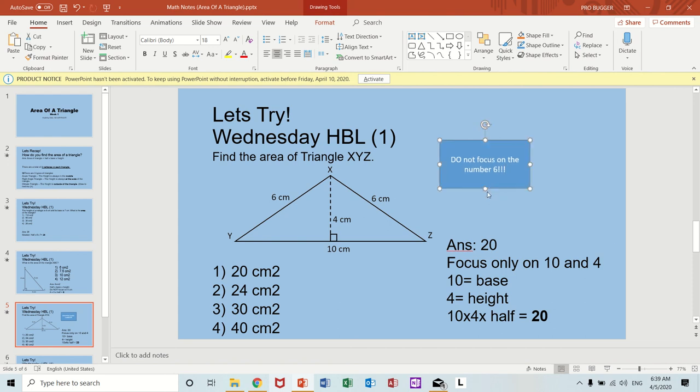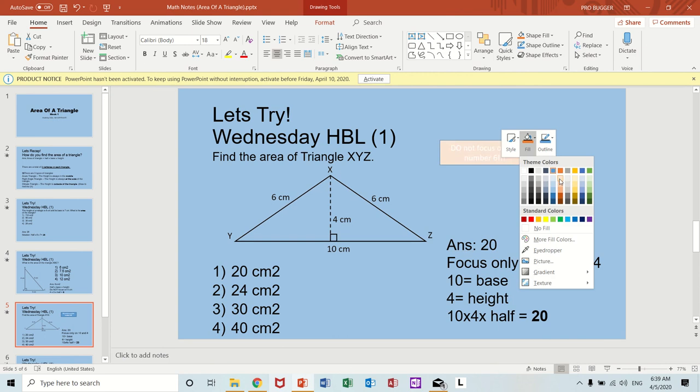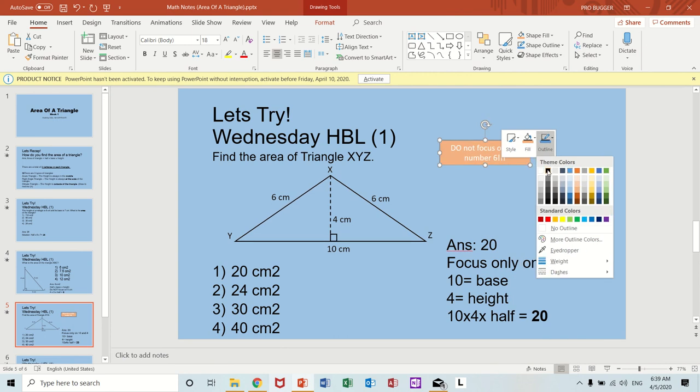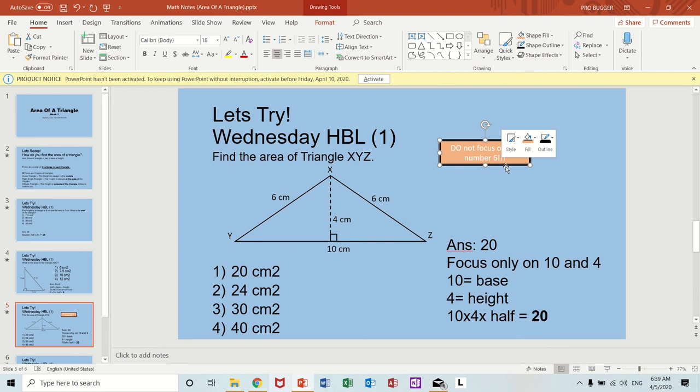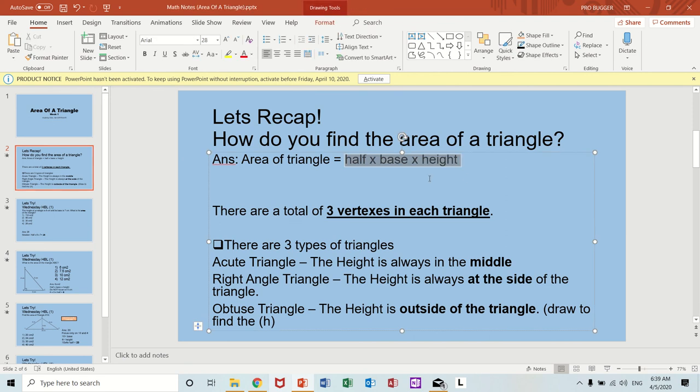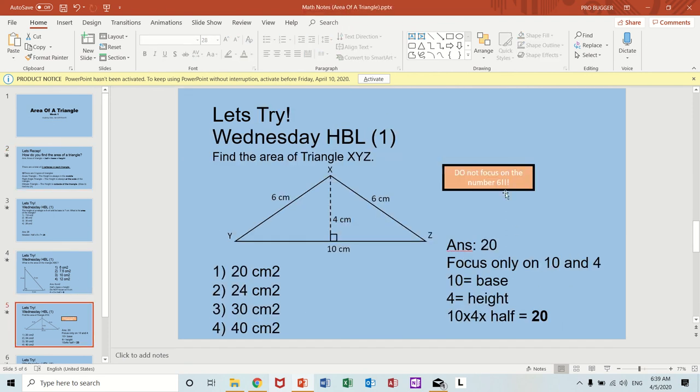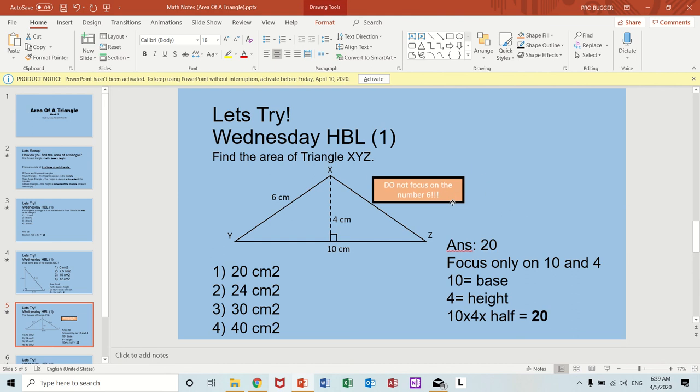Focusing on the number 6 is wrong, then you just make the answer wrong because they want you to. The formula of the area is half times base times height. What is the base? Base is 10. Height is 4. This is unnecessary. Sometimes you can do a trick.